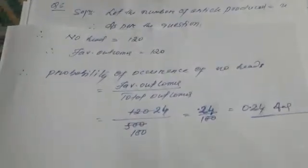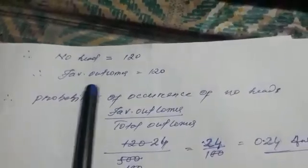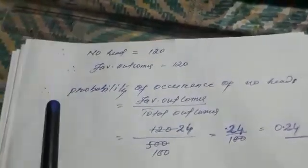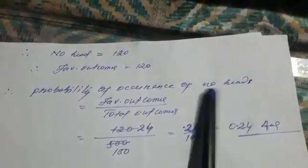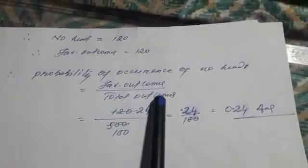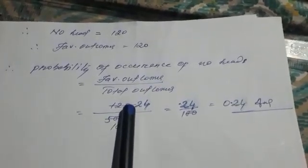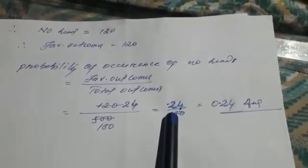Now the last part: getting no head, which means tails. No head occurred 120 times, so the favorable outcome is 120. Therefore, the probability of occurrence of no head equals favorable outcome divided by total outcome — that is 120 divided by 500. Divide both by 5: 120 ÷ 5 = 24, and 500 ÷ 5 = 100. We get 24/100.